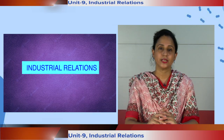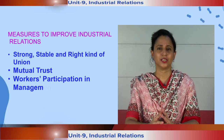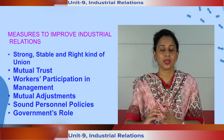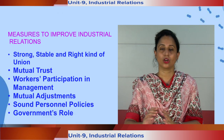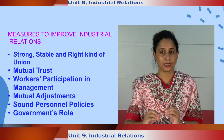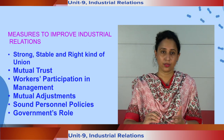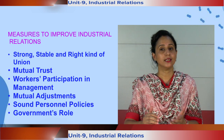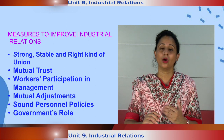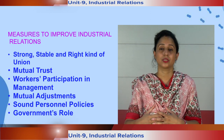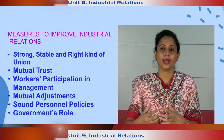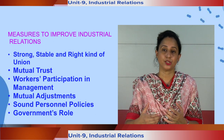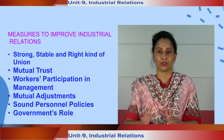Let us now discuss some of the measures to improve industrial relations. There are many measures employers should take to achieve good industrial relations. There should be a strong, stable, and right kind of union in the organization or industry. If there is a weak union, management will take advantage of the workers and agreements will hardly be honored by a large section of the workforce. A strong and stable union must represent the majority of workers and negotiate terms and conditions of service with management.